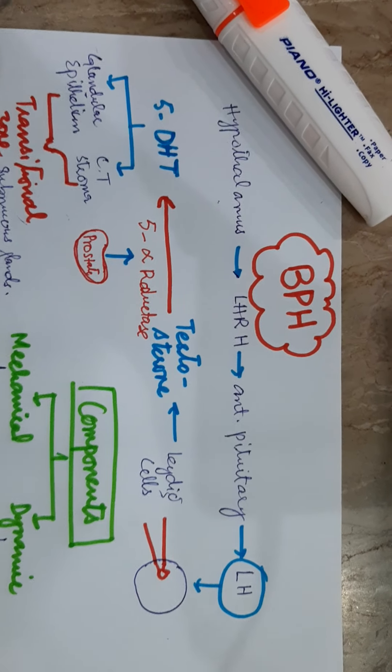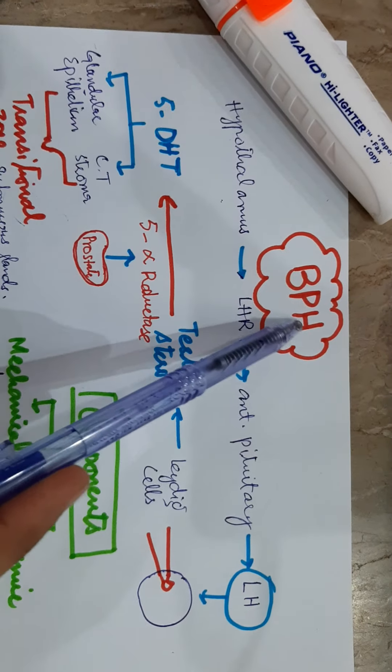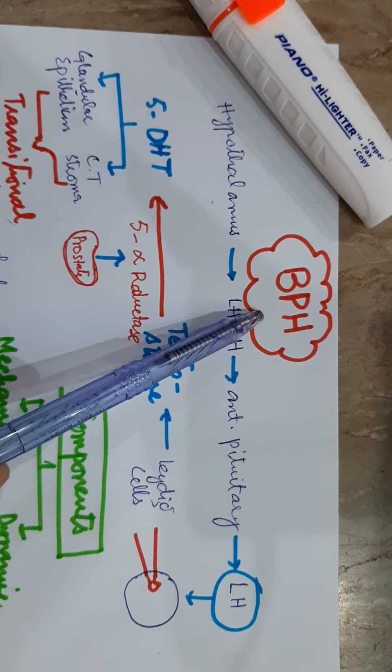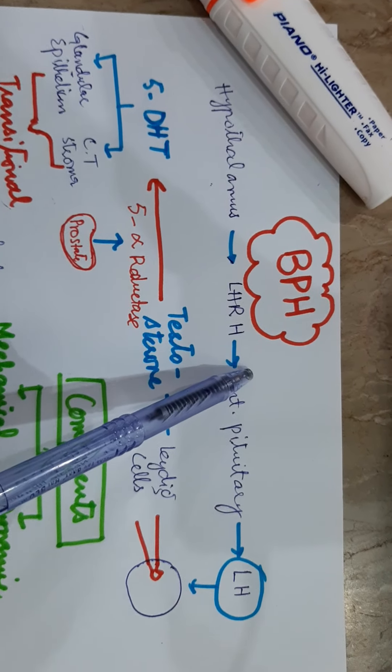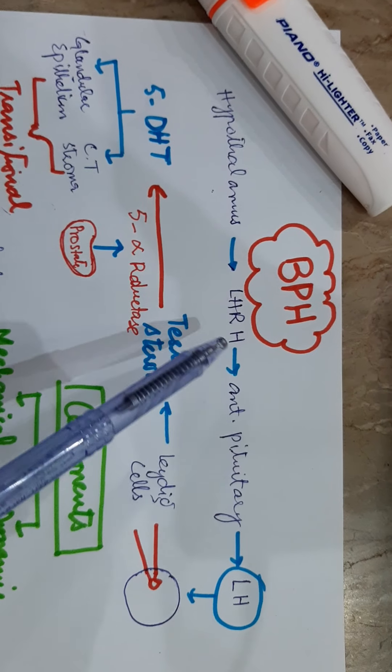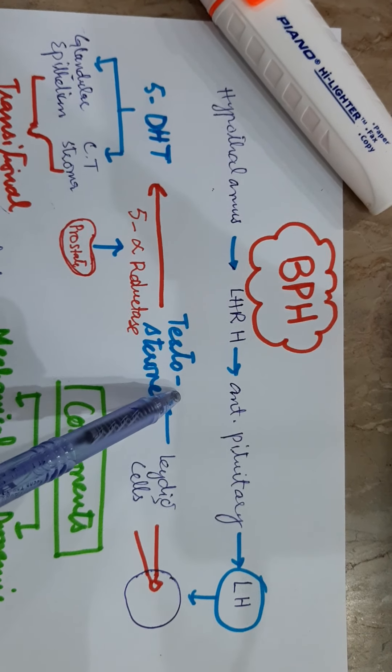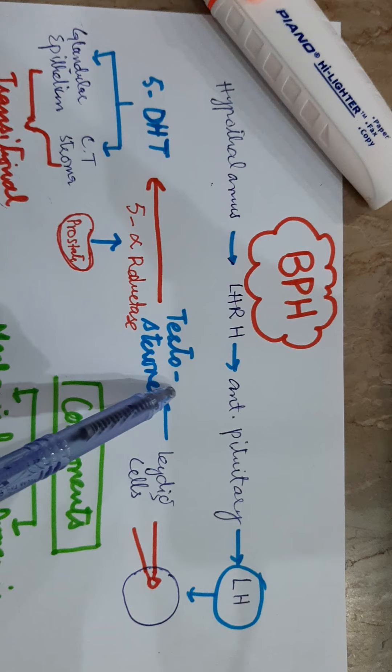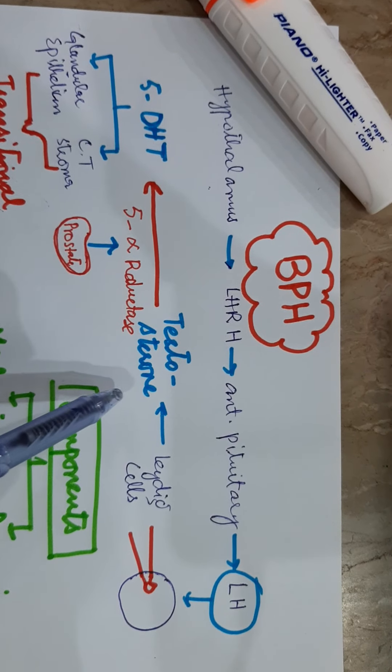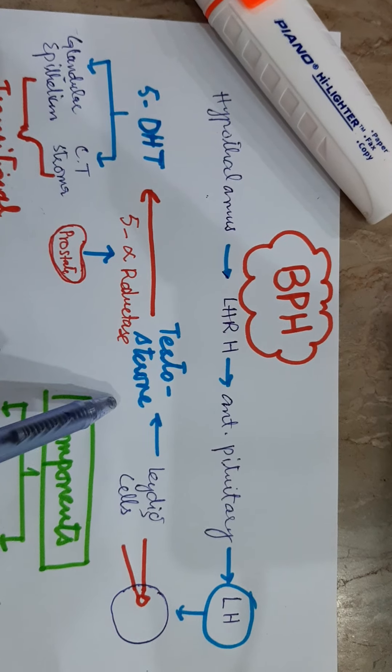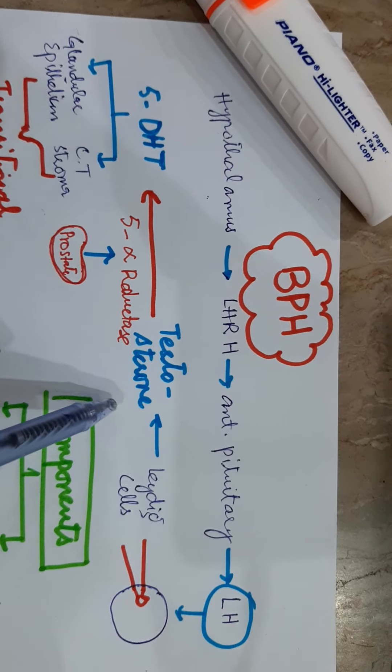Benign prostatic hyperplasia, BPH. It's a very common benign condition of the prostate that occurs in men over 50 years of age. By the age of 60 years, 50% of men have histologically evident BPH. It's a common cause of significant lower urinary tract symptoms in men and is the most common cause of bladder outflow obstruction.